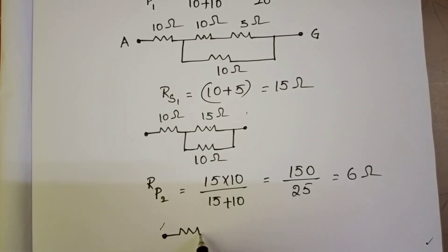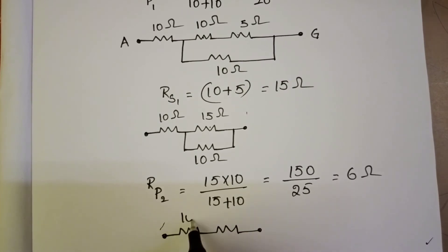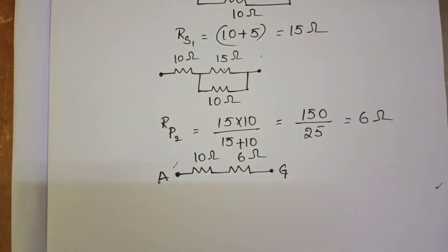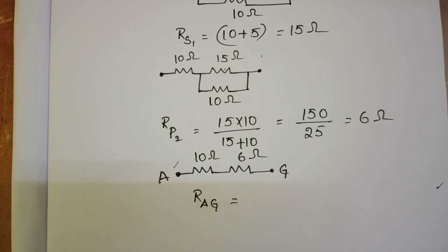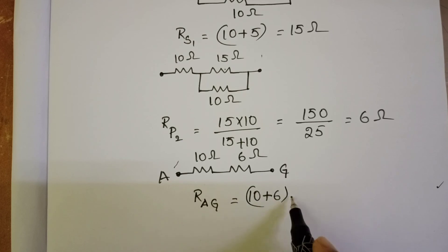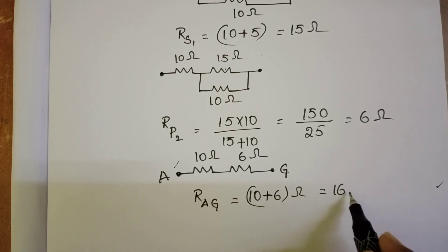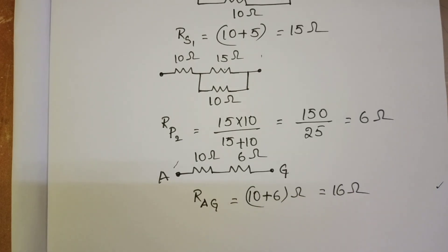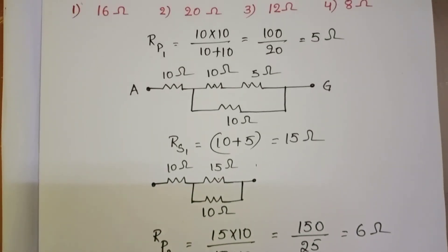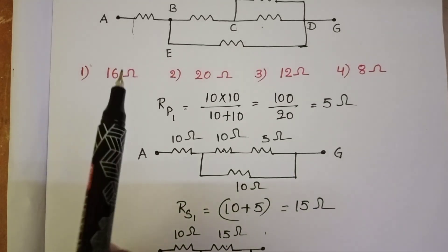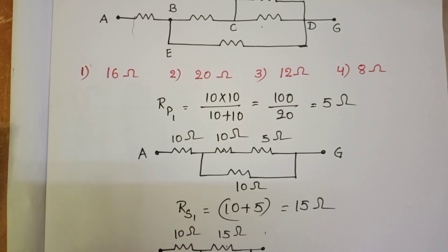Finally, the circuit reduces to a 10 ohm and 6 ohm resistor in series. The equivalent resistance between A and G equals 10 plus 6, which is 16 ohm. Checking the options, 16 ohm is the correct answer.